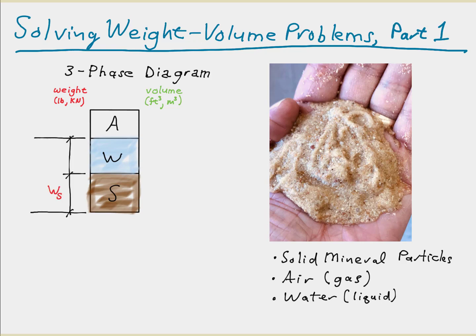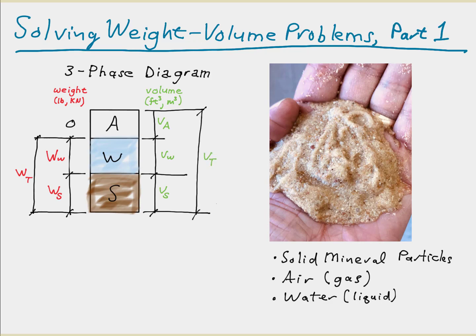On the weight side, we use W sub s to represent the weight of the solids, W sub w for the weight of the water, and W sub t for the total weight. The weight of the air or gas is zero. On the volume side, we use V sub s for the volume of the solids, V sub w for the volume of the water, V sub a for the volume of the air, and V sub t for the total volume. V sub v represents the volume of the voids, which equals the volume of the water plus the volume of the air.